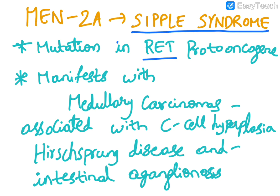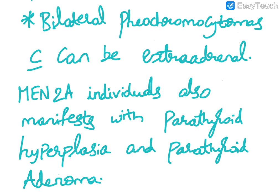MEN2a is also known as Sipple syndrome. The mutation in the RET proto-oncogene is the main reason for MEN2a. MEN2a individuals manifest with medullary carcinoma of the thyroid associated with C-cell hyperplasia, Hirschsprung disease, and intestinal aganglionosis.